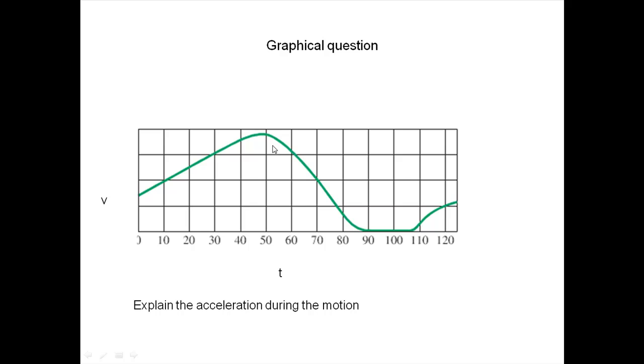Going forward from 50 to 60 seconds, the body is retarding because the velocity is decreasing. But the acceleration in the negative sense is getting increased. That means the body is retarding at slow acceleration first, and it's slowly increasing until it reaches this point at 60.